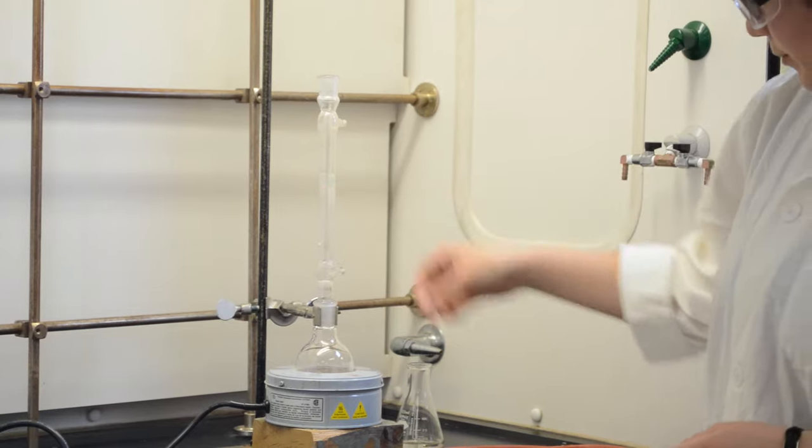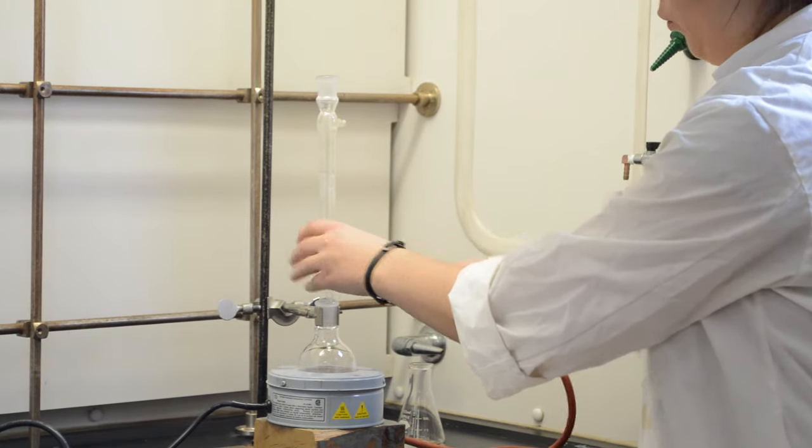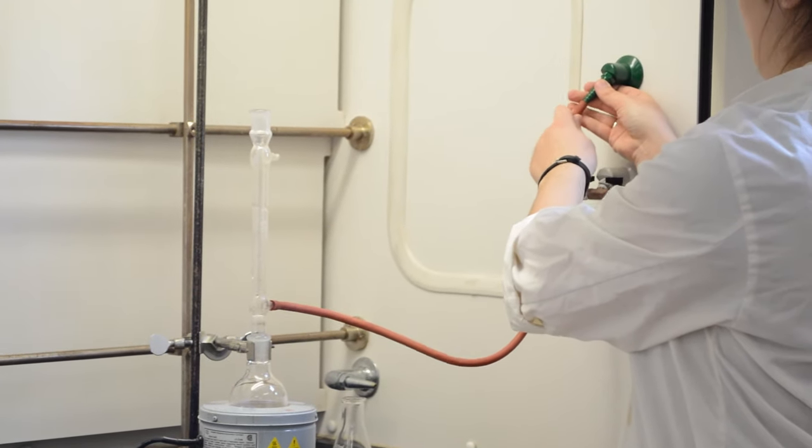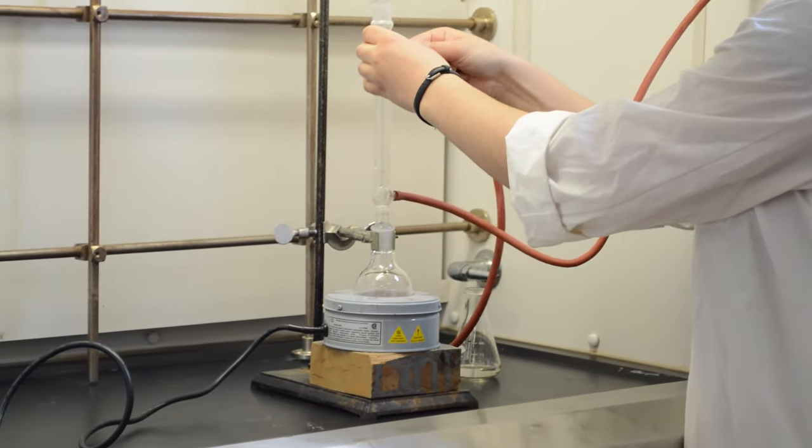Next, the cold water condenser is placed on top of the ground glass flask, and the water inlet is attached to the bottom of the condenser. The drain is attached to the top of the condenser.